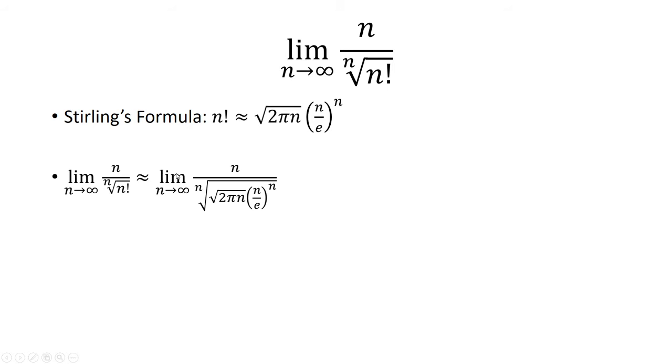So I'm going to take that formula and replace it in for n factorial. And the next step, I have to distribute the nth root to both the square root of 2 pi n and n over e raised to the n power.